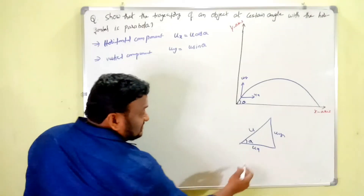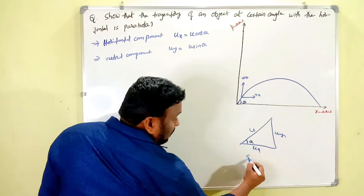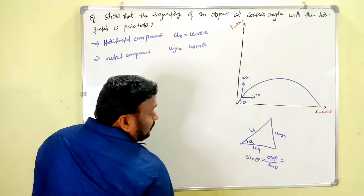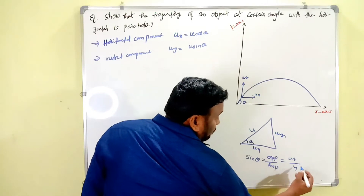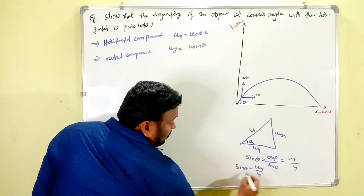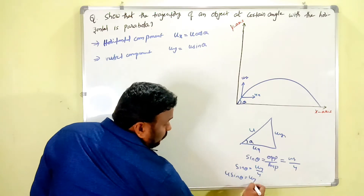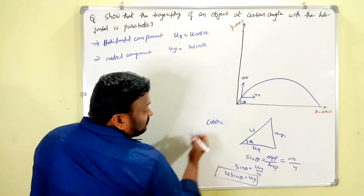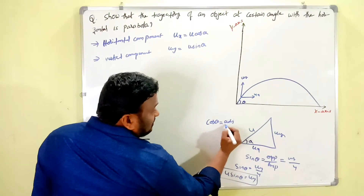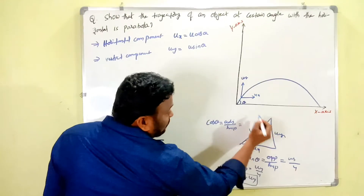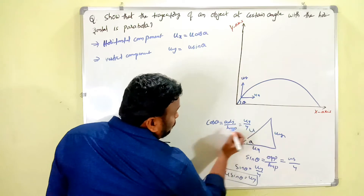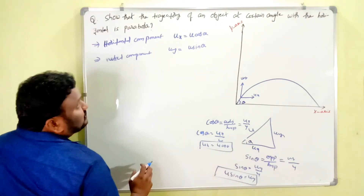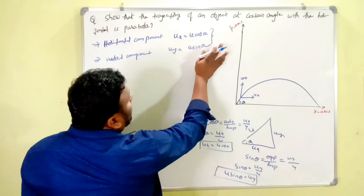To derive these: sin theta equals opposite side by hypotenuse, where the opposite side is uy and hypotenuse is u, so sin theta equals uy divided by u, giving uy equals u sin theta. Similarly, cos theta equals adjacent side by hypotenuse, where adjacent side is ux and hypotenuse is u, so cos theta equals ux divided by u, giving ux equals u cos theta.